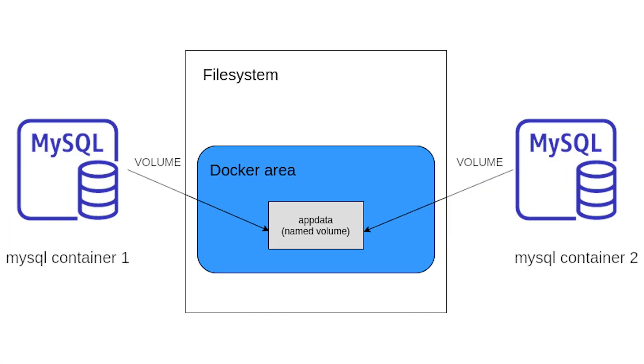Let's look at the various types of Docker Volumes. First, we have Named Volumes. These are managed by Docker directly and are stored in a part of the host file system which Docker controls. Named Volumes are easy to backup and migrate, and they are ideal for production use with databases.